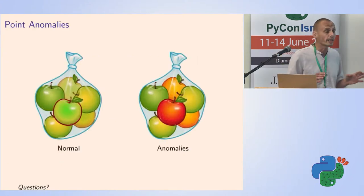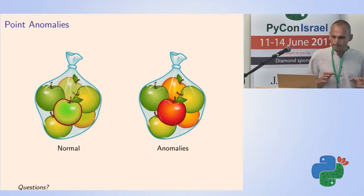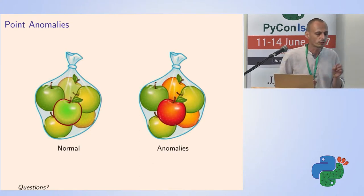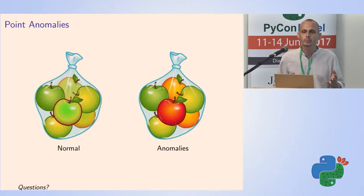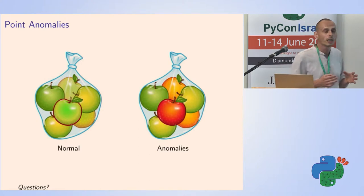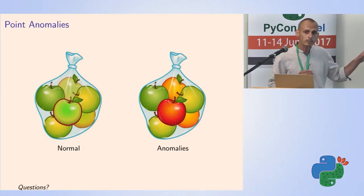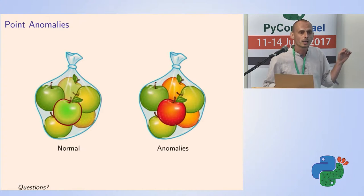First of all, let me define what an anomaly or novelty is. It's basically an individual, a phenomenon, or group of items in the evaluation data which seems impossible or highly unlikely based on what we learn from historical data. So if all of our historical data is green apples, seeing orange and red apples most probably indicates an individual anomaly.